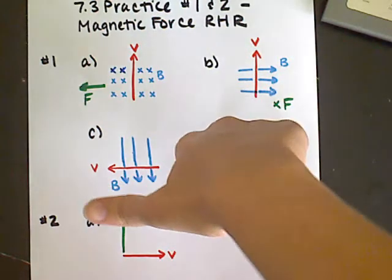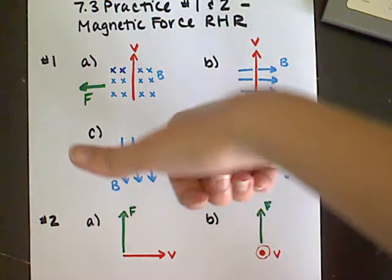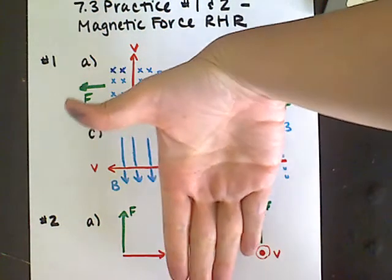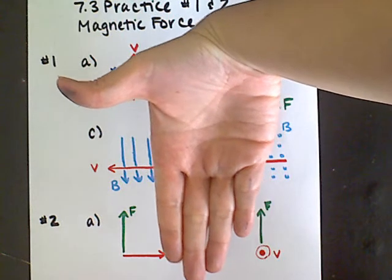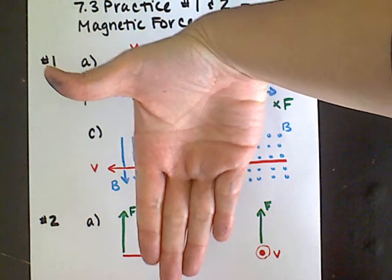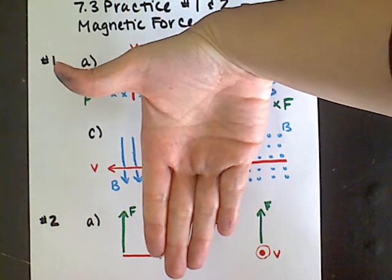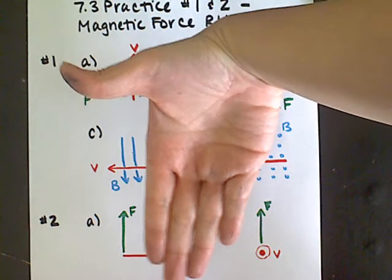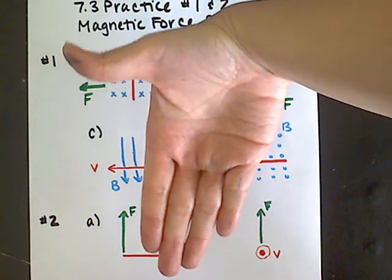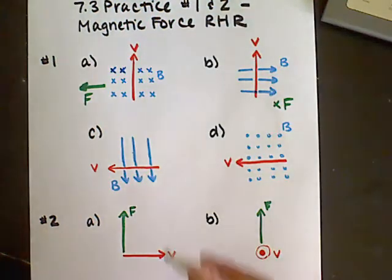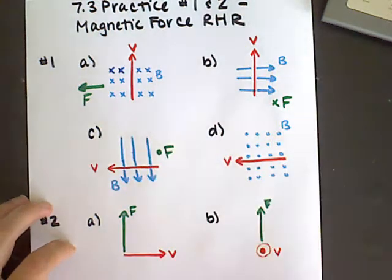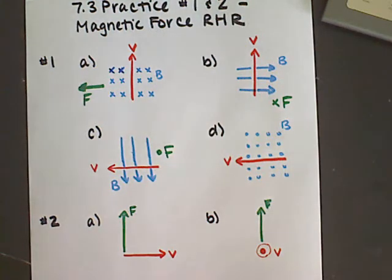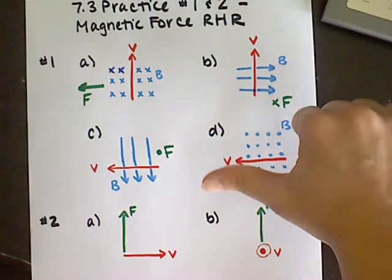For part c, my velocity is going to the left, so my thumb goes to the left. The magnetic field is pointing down, so I rotate my hand so my fingers point downward. When I do that, I see my palm is facing out of the page — towards me — so the direction of the force is coming out of the page.